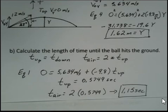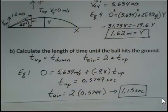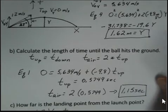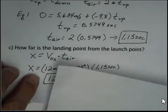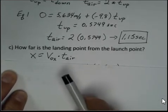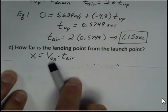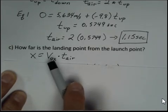This now allows us to do a calculation in the x direction. We want to calculate the range. How far away from the launch point do we land? The equation we use is to recognize that in the x direction there's only one equation. Distance equals rate times time. The rate is constant. In the x direction, ignoring air resistance, the velocity is constant.